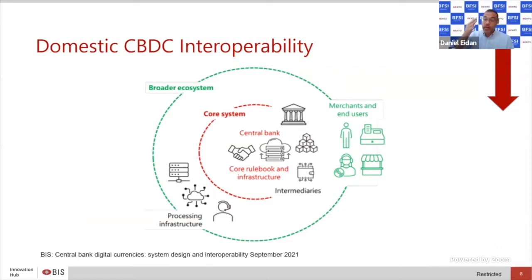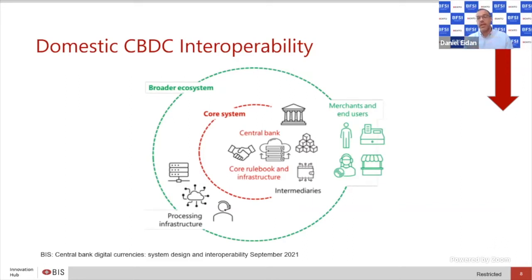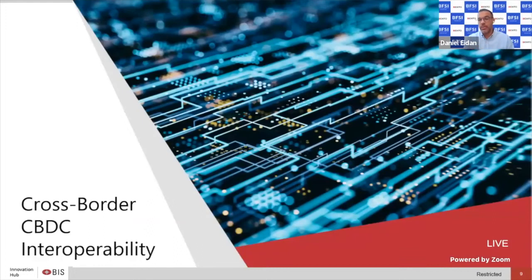This type of vertical interoperability is what you have to think about when considering whether a CBDC is interoperable from a domestic lens. It doesn't necessarily have to cover the entire stack, but it needs to work with straight-through processing for the entire stack, independent of how many layers it consumes within this two-tier operating model.